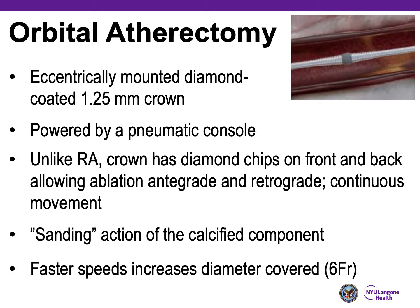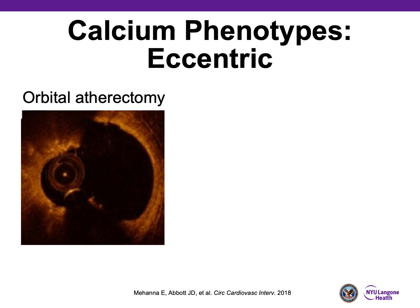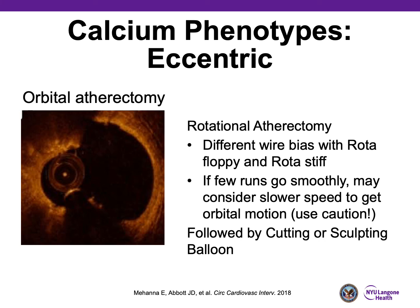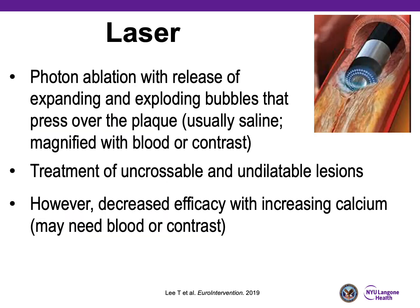Orbital atherectomy uses an eccentrically mounted diamond-coated 1.25-millimeter crown powered by a pneumatic console. Unlike rotational atherectomy, the crown has diamond chips on the front and back, allowing ablation antegrade and retrograde. Rather than a slow pecking motion, it requires continuous movement — a sanding action of the calcific component. With faster speeds, you can increase the diameter of coverage, allowing larger lesions to be treated using just a 6 French guide. For eccentric calcium, orbital atherectomy is usually preferred. With rotational atherectomy, you can create a different wire bias by exchanging to a rota-stiff wire for eccentric lesions, but urge caution. It's important to follow atherectomy with a cutting or scoring balloon to ensure good cracking of the lesion.